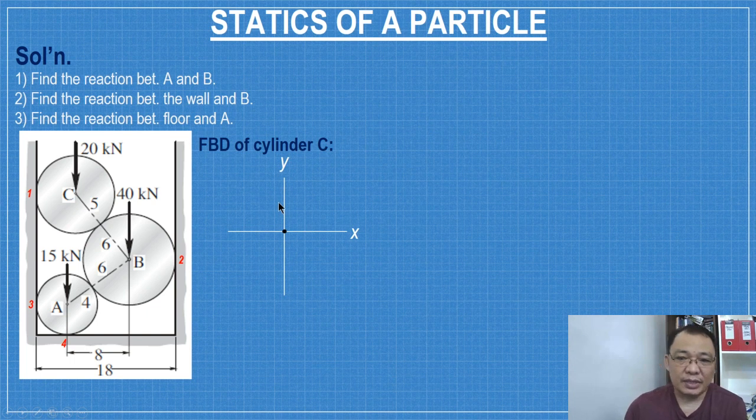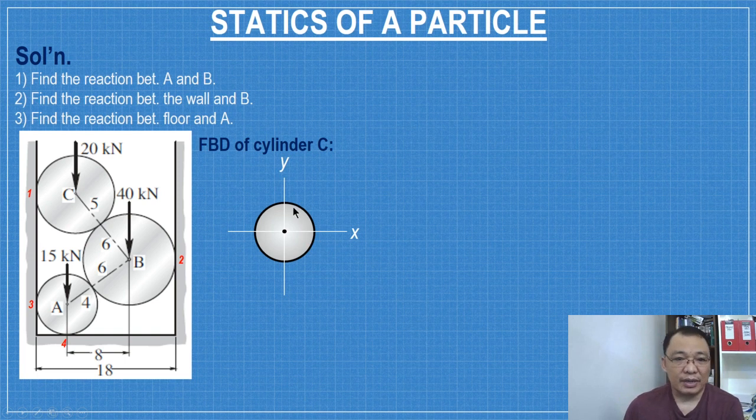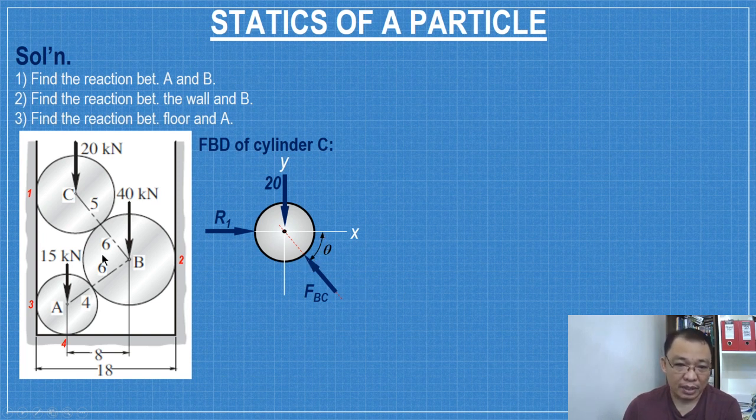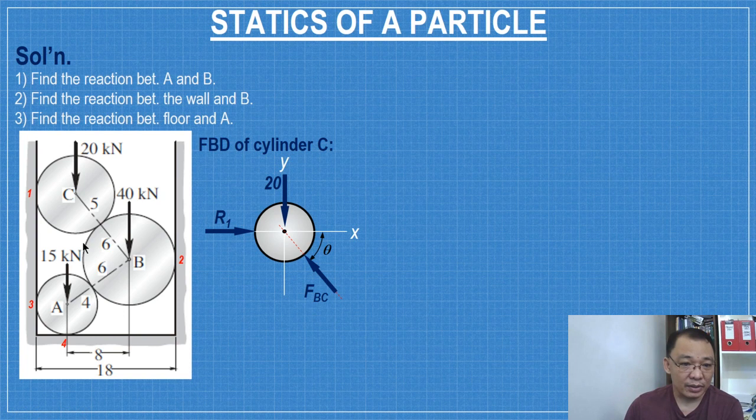For cylinder C, draw the cylinder and then identify the forces. You have 20, the weight. And then reaction at one, and then force BC. Unknown is theta, so we'll solve for theta. That's BC. Theta is the angle that FBC makes with the horizontal. And so we construct a right triangle. This is theta.